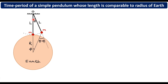We have made a very small displacement, so the bob has come to this position. Since L is comparable to R, the displacement length is very small compared to the radius of the earth. We can take the approximation that this length is still approximately equal to the radius of the earth, because the angular displacement is very small.